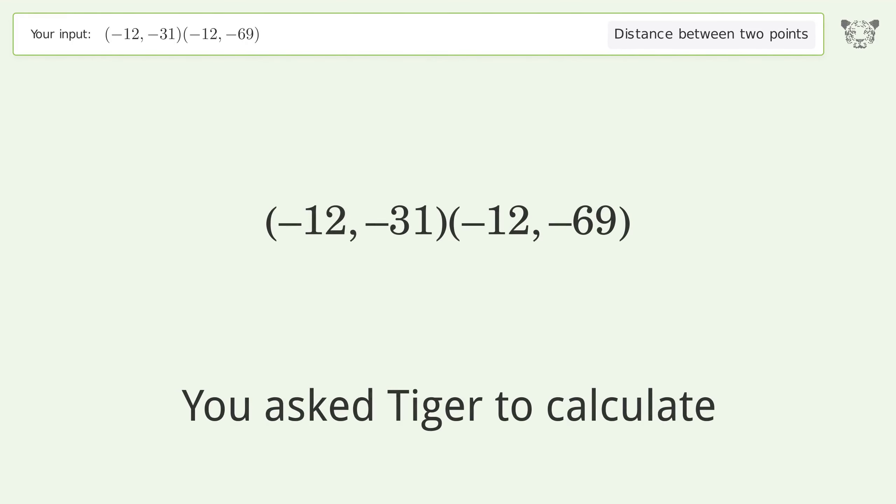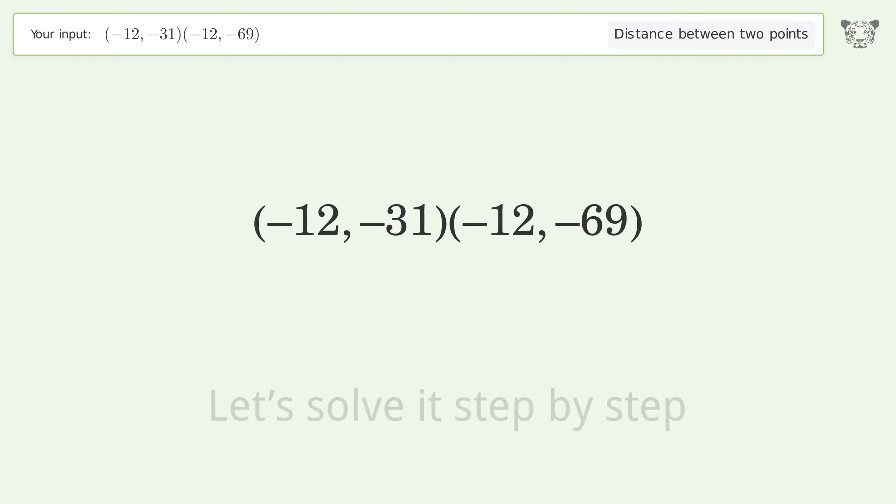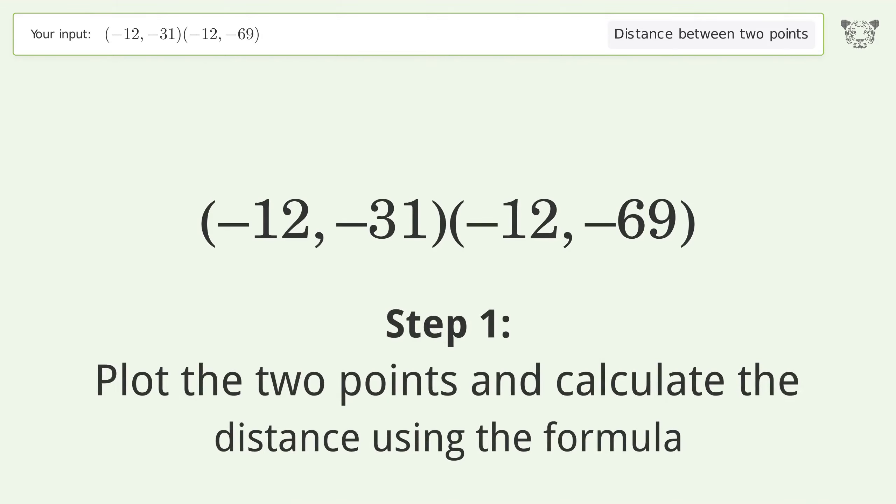You asked Tiger to calculate the distance between two points. The distance between the two points is the square root of 1444, or 38. Let's solve it step by step.